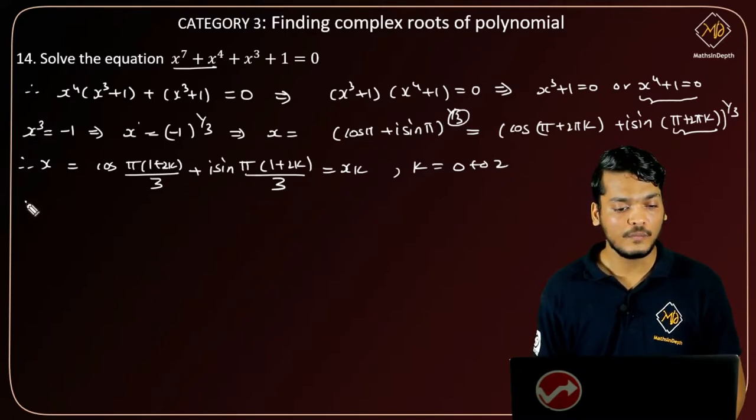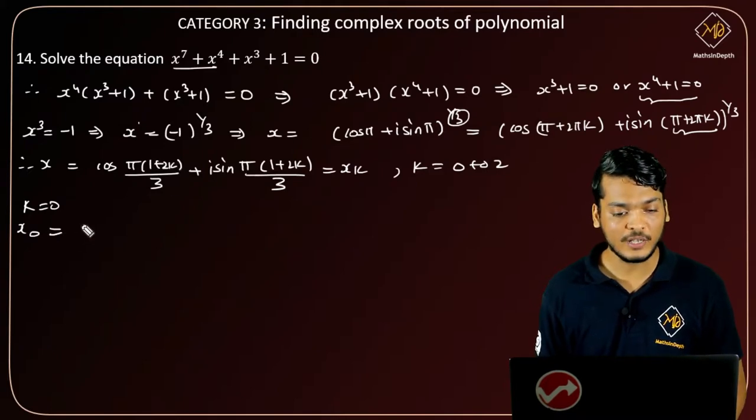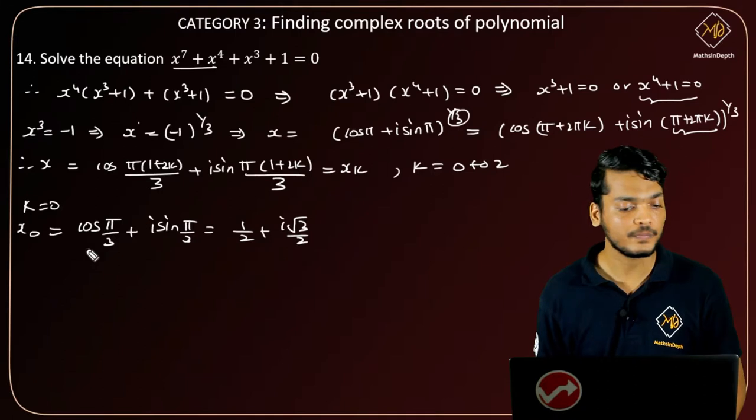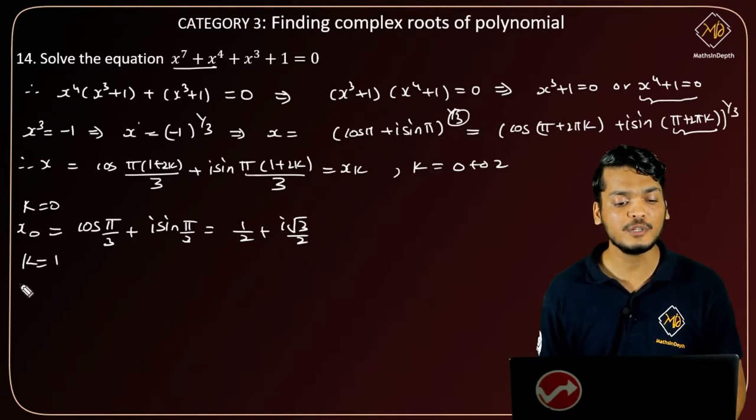For k equals to 0, x_0 equals to, putting k as zero, the first root is cos of pi by 3 plus i sine pi by 3, which is equal to x equals to 1 by 2 plus i times root 3 by 2.